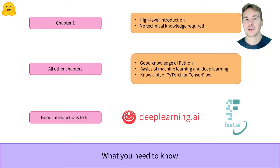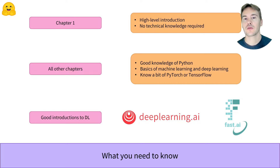The next chapters require a good knowledge of Python and some basic knowledge of machine learning and deep learning. If you don't know what a training and validation set are, or what gradient descent means, you should look at an introductory course such as the ones published by deeplearning.ai or fast.ai.